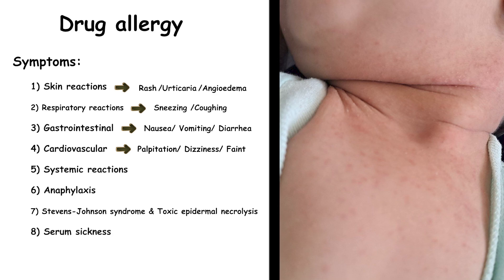Serum sickness is an immune complex-mediated reaction that can occur 1 to 3 weeks after exposure. There is also sometimes hemolytic anemia, defined as the destruction of red blood cells, and sometimes acute interstitial nephritis, defined as inflammation of the kidneys that may cause fever, rash, and sometimes changes in urination.